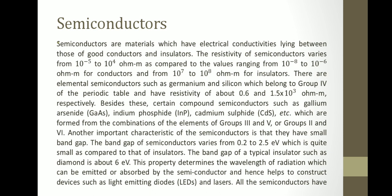Elemental semiconductors such as germanium and silicon belong to group 4 of the periodic table, with resistivities of about 0.6 and 1.5×10³ ohm·meter respectively. Compound semiconductors such as gallium arsenide, indium phosphide, and cadmium sulfide are formed from combinations of elements of groups 3 and 5, or groups 2 and 6. Another important characteristic is their small band gap of 0.2 to 2.5 eV, compared to about 6 eV for insulators like diamond. This property determines the wavelength of radiation emitted or absorbed, enabling devices such as LEDs and lasers.